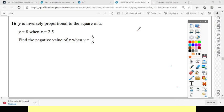Y is inversely proportional to the square of X. When Y equals 8, X is 2.5. Find a negative value of X when Y equals 8/9.